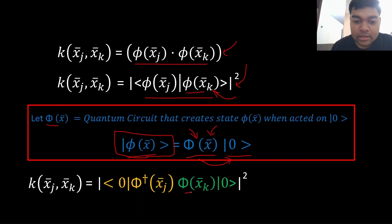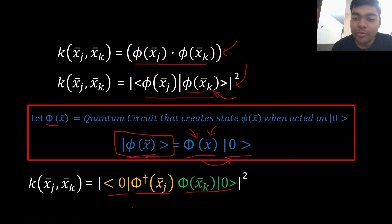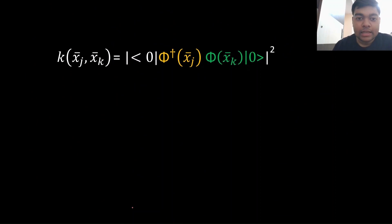If I substitute and replace state phi with circuit Phi, I get this expression. The green part is straightforward. The yellow part is just the dagger of that particular quantum circuit — it's just reversing the circuit from right to left and inverting all the gates, which is really simple; the quantum SDKs take care of it. And this is bra-zero, the dual of the ket-zero. This is basic Dirac notation, nothing super complicated.